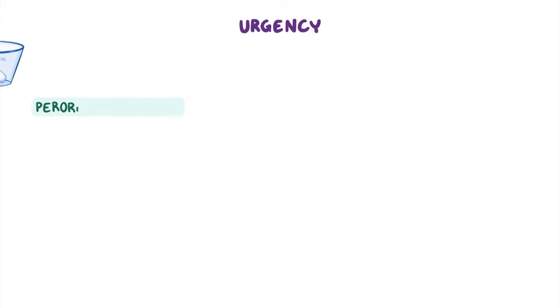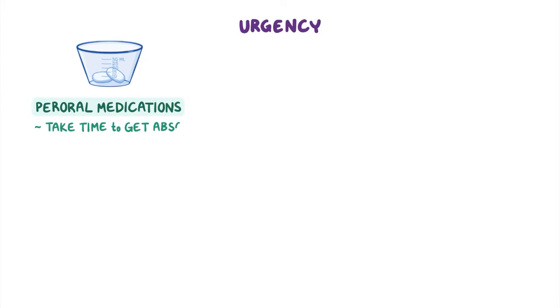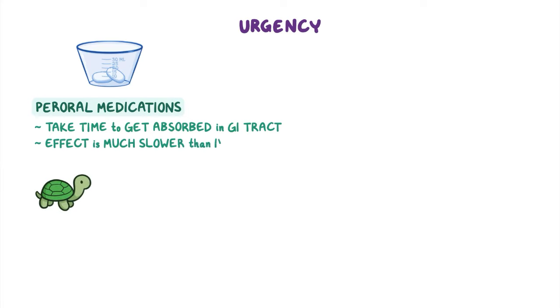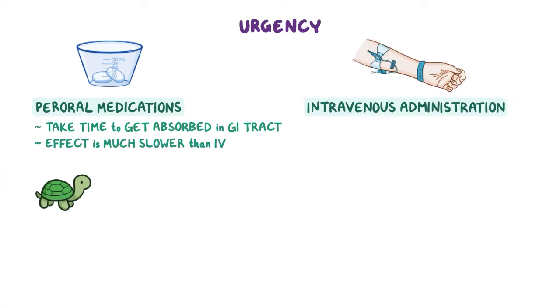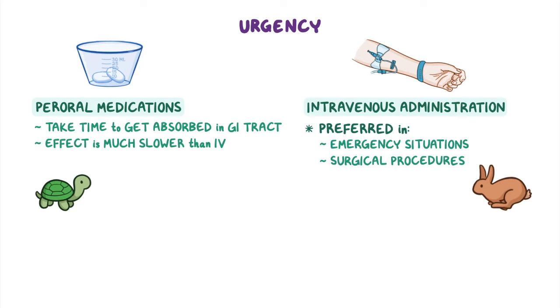Another factor for deciding the route of administration is the urgency of the situation. Paroral medications take time to get absorbed in the GI tract, so they produce an effect much slower than intravenous ones. For this reason, intravenous administration is usually preferred in emergency settings and during surgical procedures. On the flip side, oral preparations are much easier to take at home and don't need any special equipment.